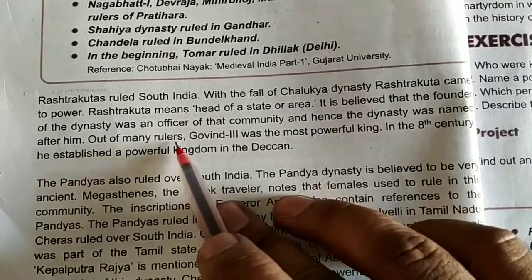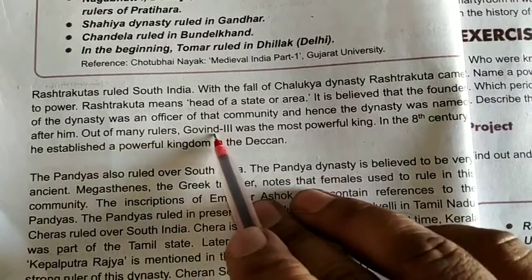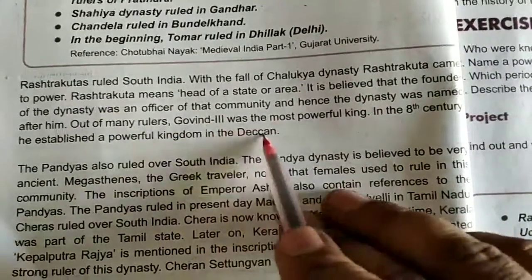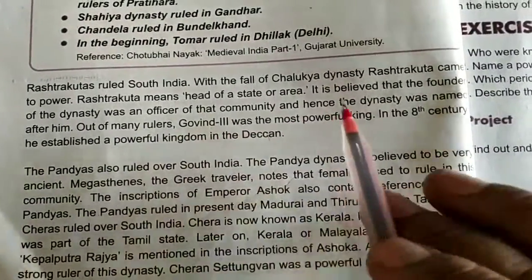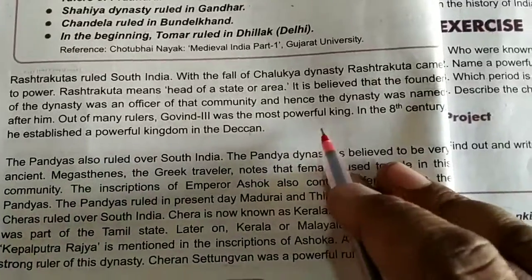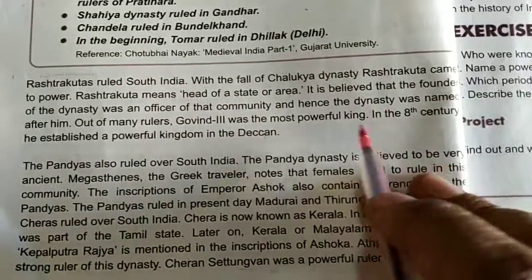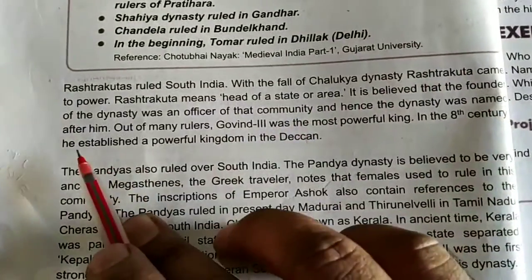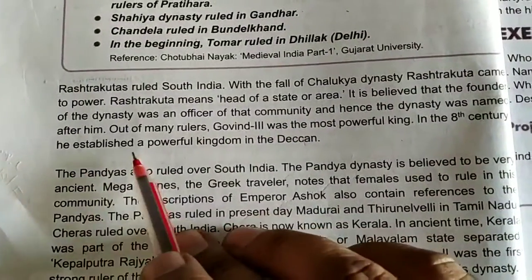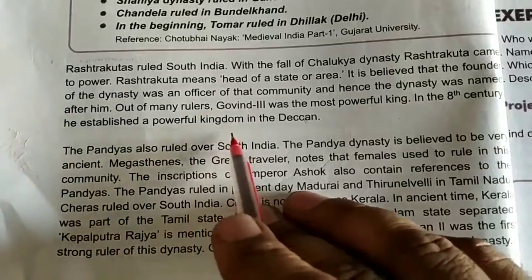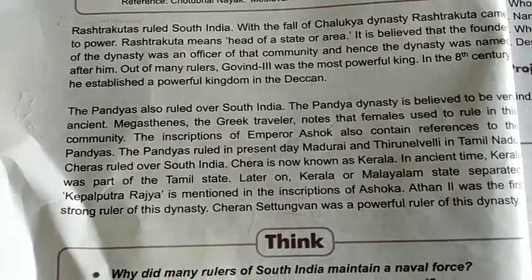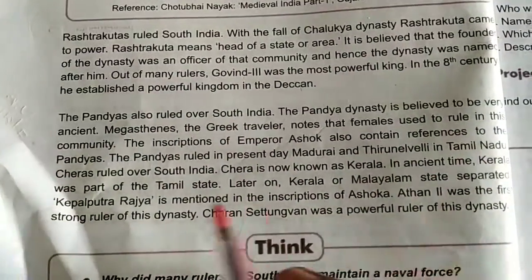Out of many rulers, Govinda III was the most powerful king. In the 8th century, he established a powerful kingdom in the Deccan — meaning South India.